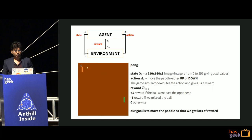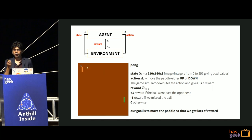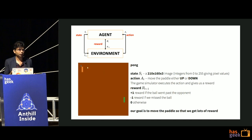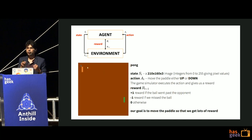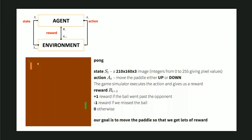In the Pong example: the state is a 210 by 160 by 3 RGB image, where each pixel has a value between 0 and 255 - roughly 100,000 numbers forming a state vector. The action is binary: up or down, two possible values. The reward is plus one if the ball went past the opponent, minus one if we missed the ball, and zero otherwise. Zero happens most of the time - only at certain moments do you win or lose. The goal is to figure out how to move the paddle to get lots of plus ones.